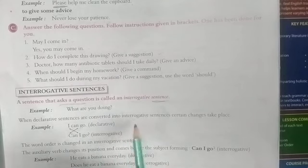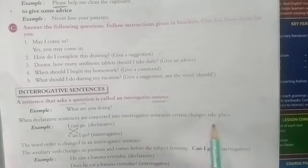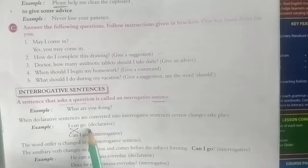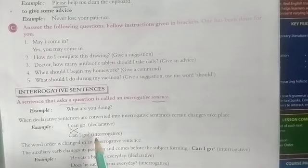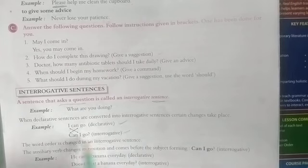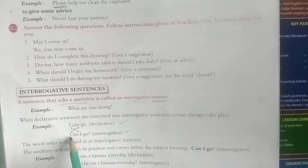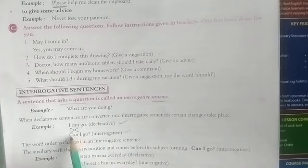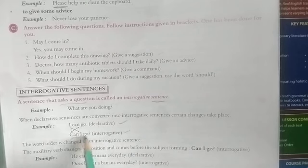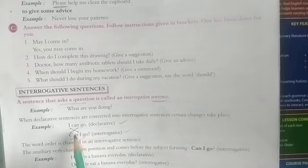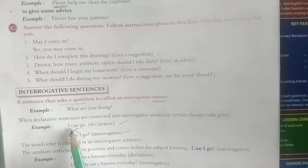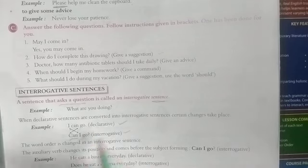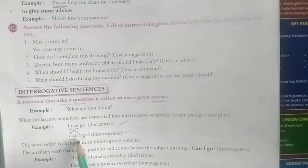When declarative sentences are converted into interrogative sentences, certain changes take place. Like 'I can go' — this is the declarative pattern. If you move this into interrogative, the second word comes to the first place: 'Can I go?' The mode is also changing — 'I can go' expresses ability, but when you are questioning you are quite uncertain: 'Can I go?'